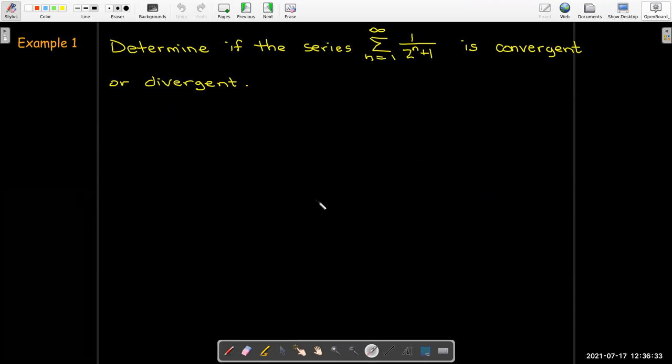Let's look at some examples. We'd like to discuss the convergence or divergence of this series sum from n equals 1 to infinity of 1 over 2 to the power of n plus 1. Well, we know that 2 to the power of n plus 1 is bigger than 2 to the power of n. That's true for all values of n. So if I take the reciprocal, I'll have to change the inequality sign. And that's actually a good thing.